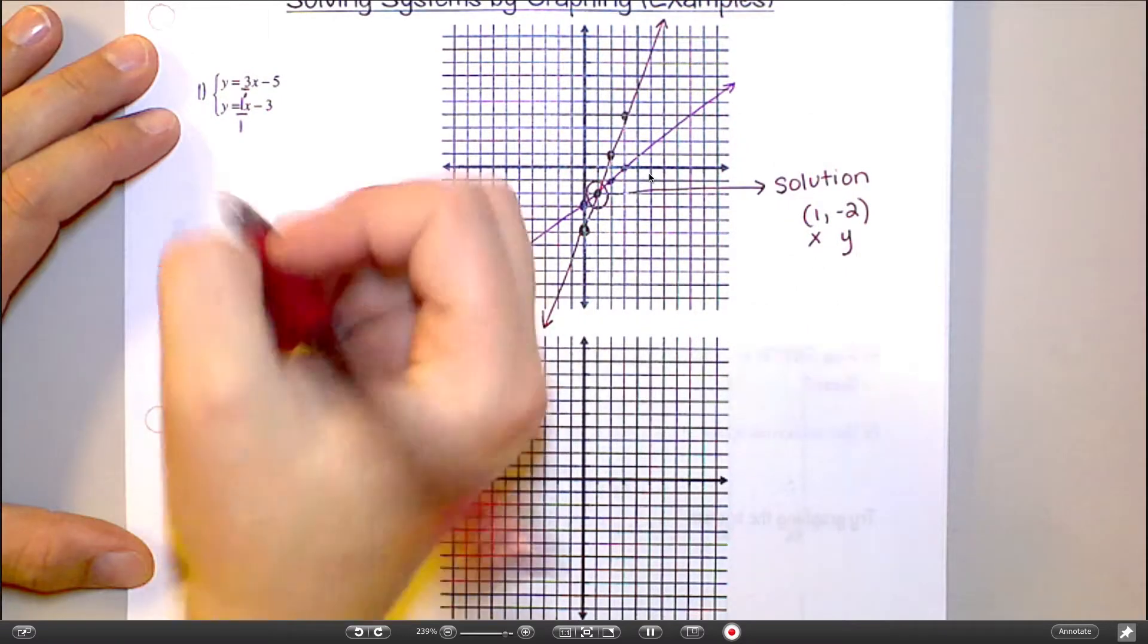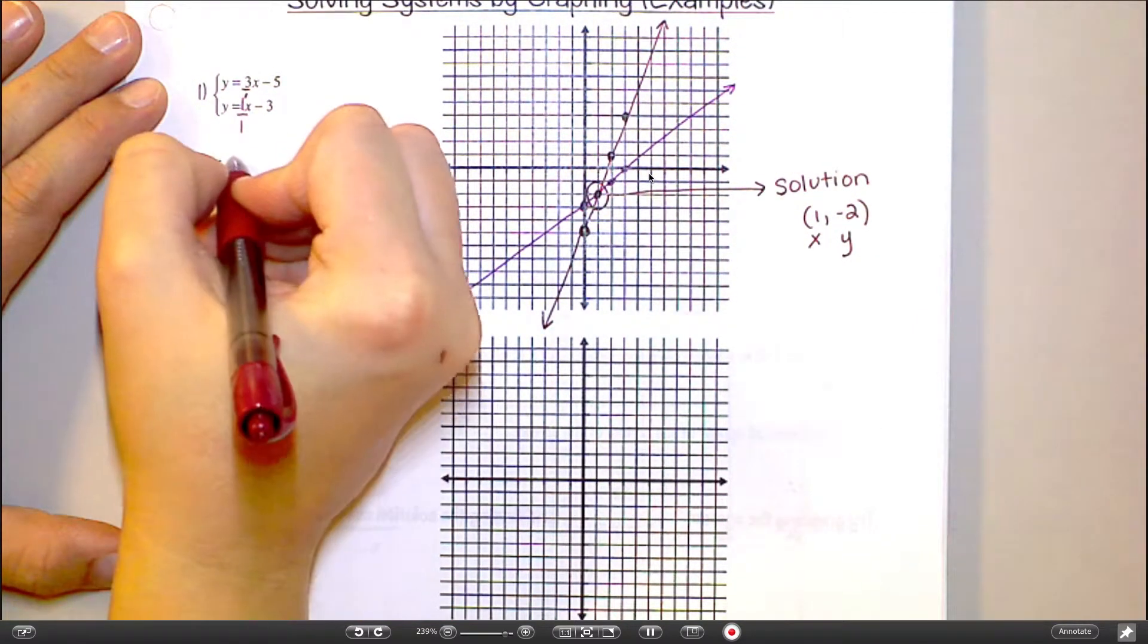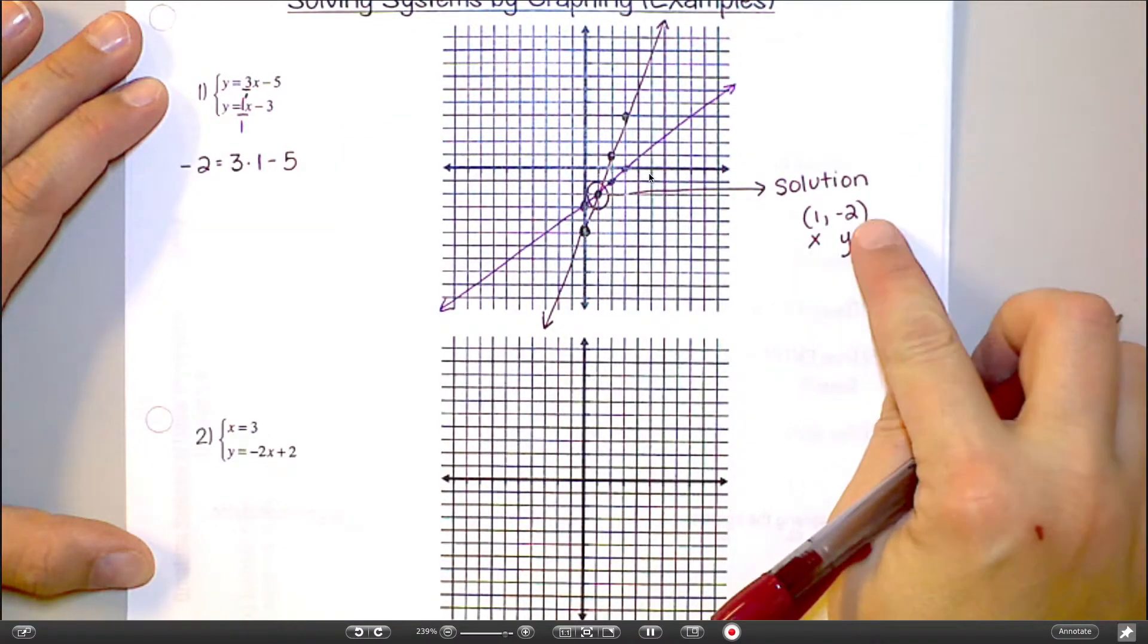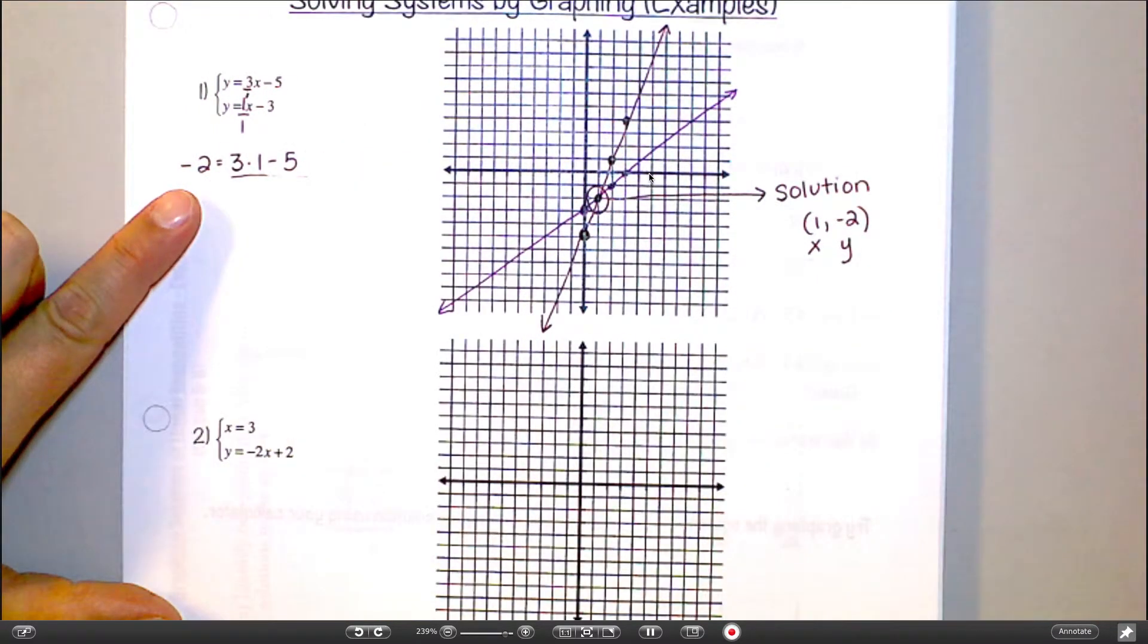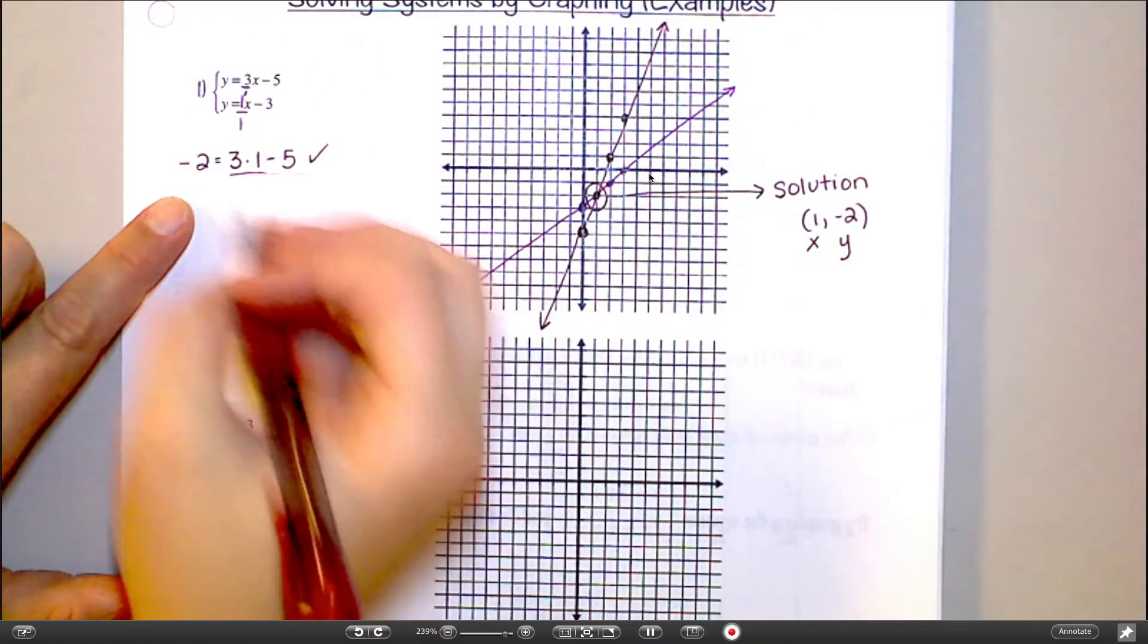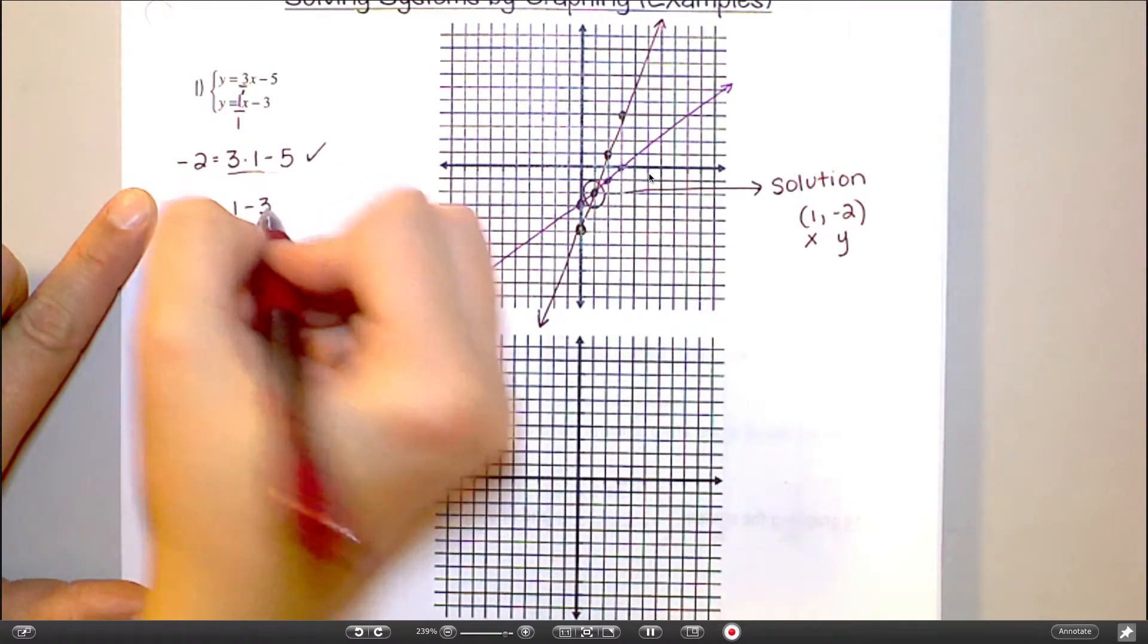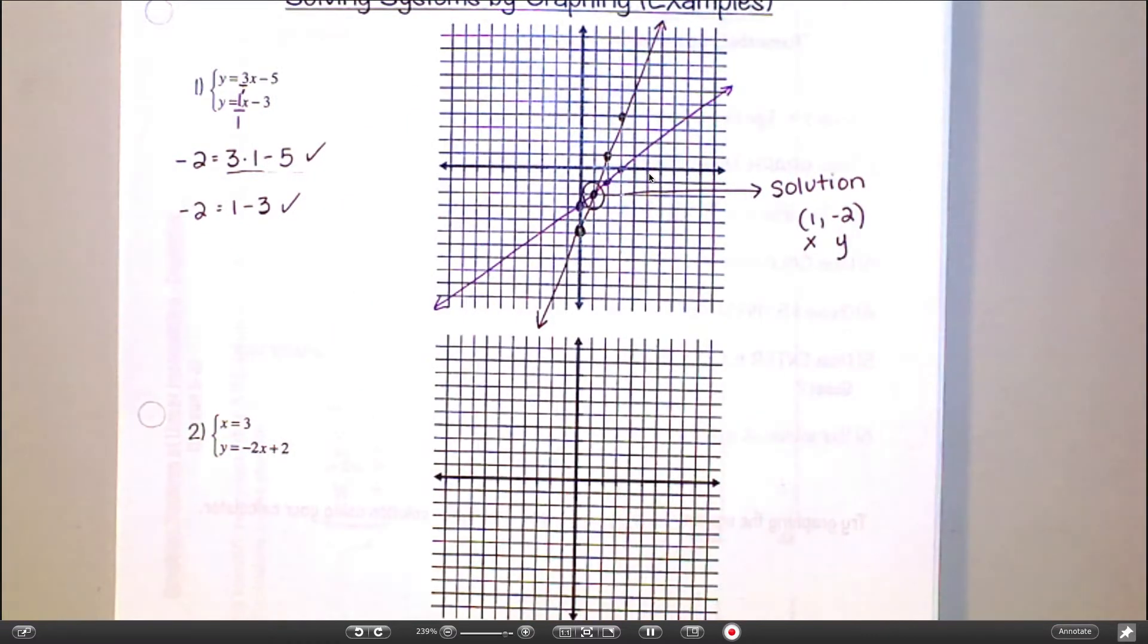So the way you can check that is take these two numbers and plug them back into both equations for x and y. And it should work in both equations. So, like for that first one, y equals 3x minus 5. So I would put in negative 2 equals 3 times 1 minus 5. So I put this in for x and this in for y. And then I want you to tell me, is that true? Is 3 times 1 minus 5 equal to negative 2? It is. Yep. So that one works. But remember, it's got to work in both. So let's check the other one. So the other one would say negative 2 equals 1 minus 3. Is that also true? Yep. So that is my solution, 1 negative 2.